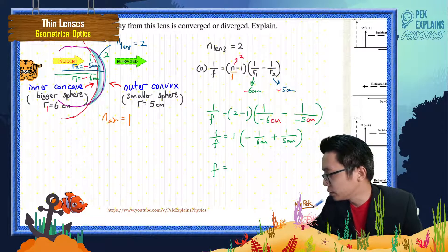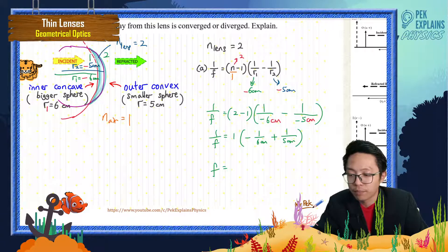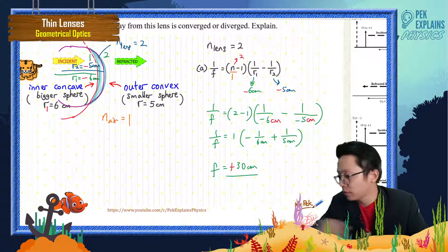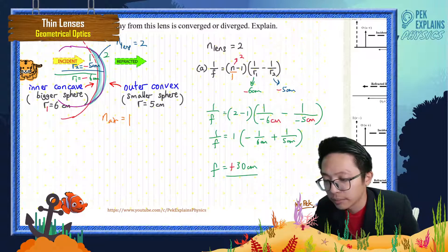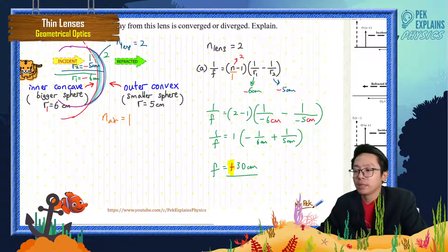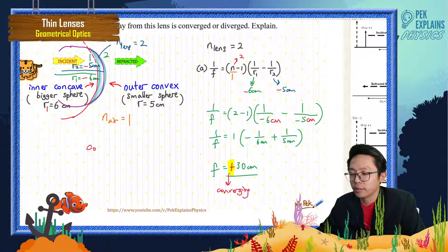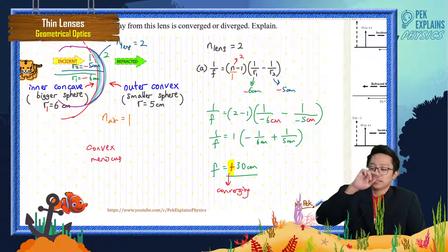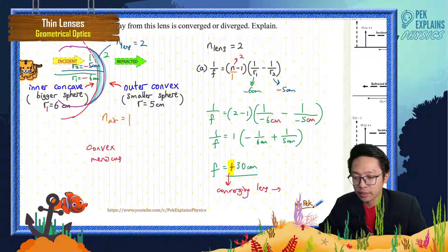After calculating, I get F equal to positive 30 cm. A positive focal length means it is a converging lens. This convex meniscus lens is therefore a converging lens — it converges light.